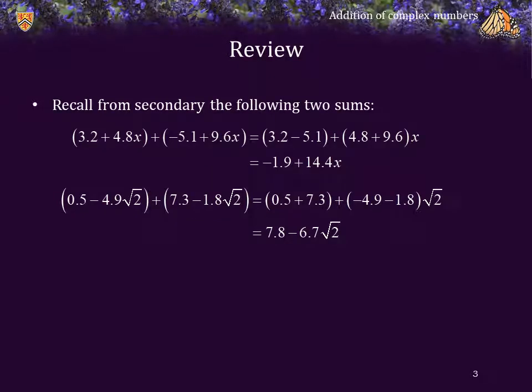Recall from secondary school the following two sums. In the first case, we have the sum of two linear polynomials, and we simply add the coefficients. In the second case, we have a radical sum, and once again, we simply add the coefficients of 1 and square root of 2 to get the result.